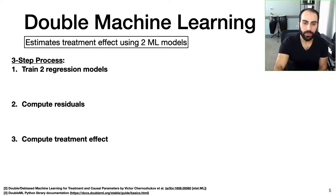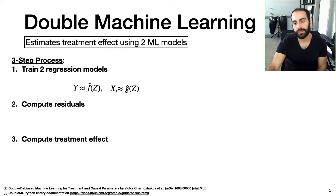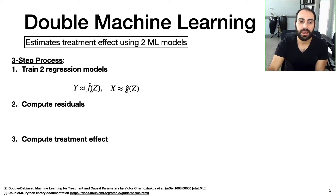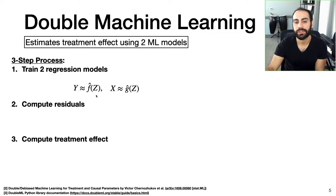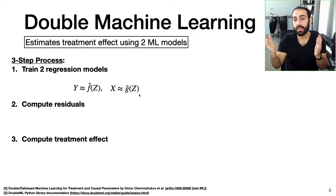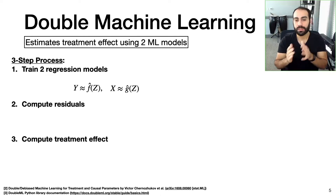The first step is we train two regression models: the outcome model and the treatment model. F̂ is a machine learning model that takes in covariate values and estimates the outcome value associated with those covariates. Similarly, Ĝ takes in covariate values and estimates the treatment value associated with those covariates. We can use any machine learning model we like — linear regression, neural networks, decision trees, whatever we like — which is one of the big powers of this approach.